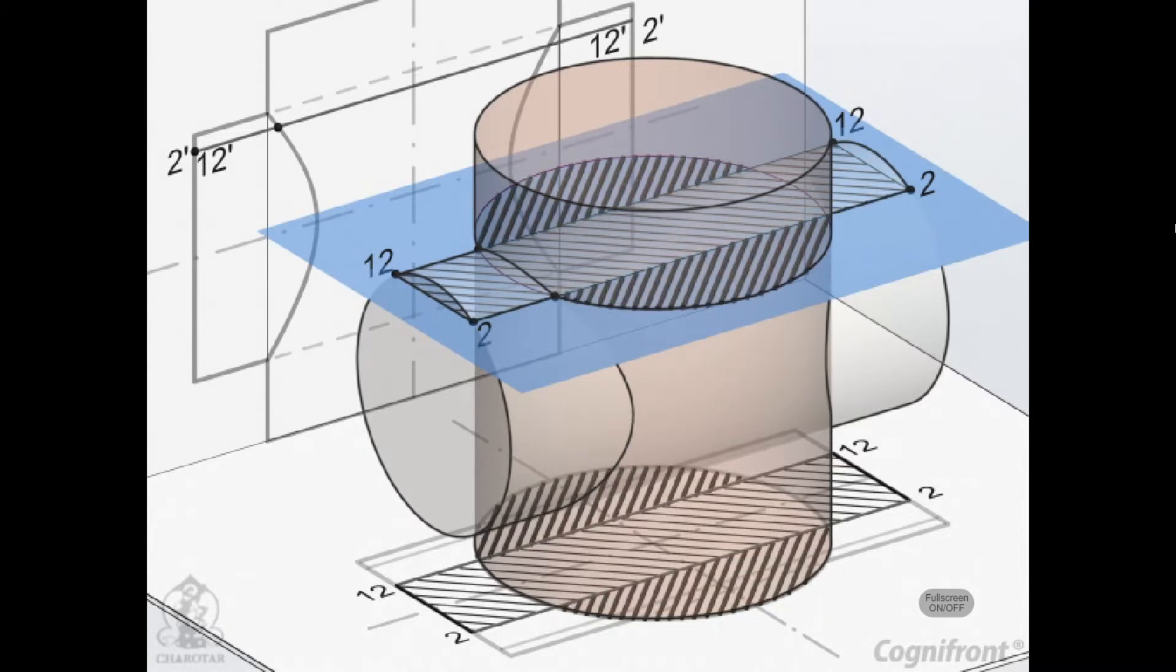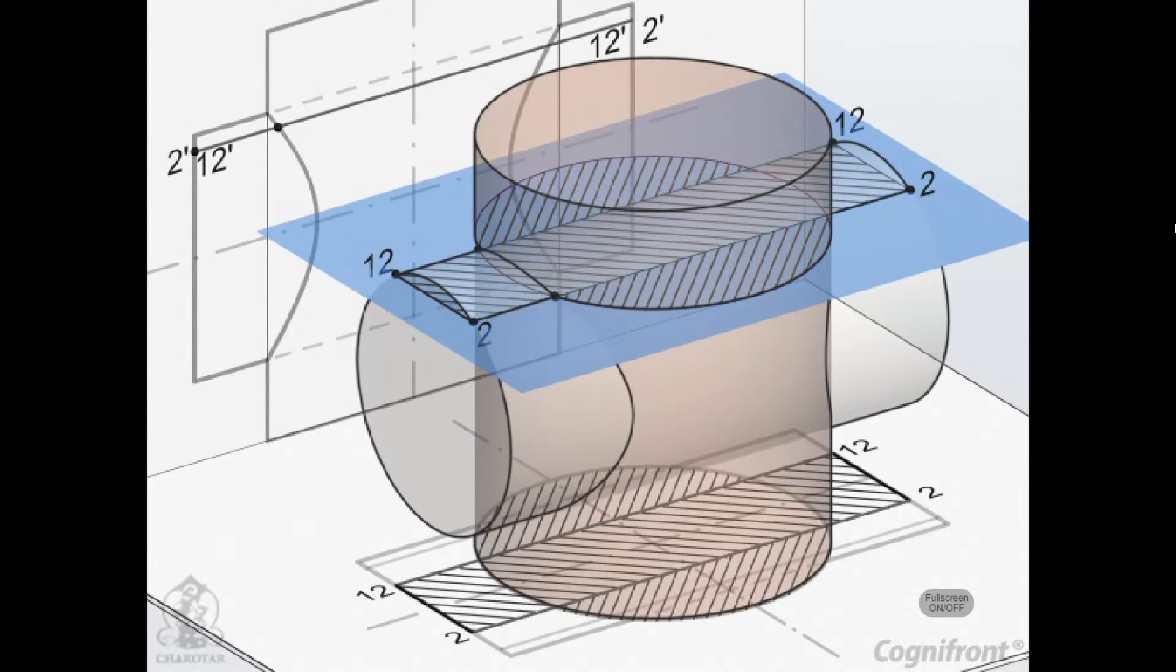The section of the vertical cylinder will be a circle. Points P2 and P12 at which the sides 2-2 and 12-12 of the rectangle cut the circle lie on the curve.